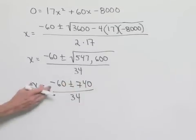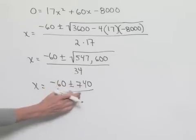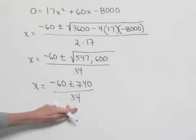Now, let's just look at this for a minute. If we take negative 60 minus 740, that's going to be a negative value, when divided by a positive value, would remain negative.